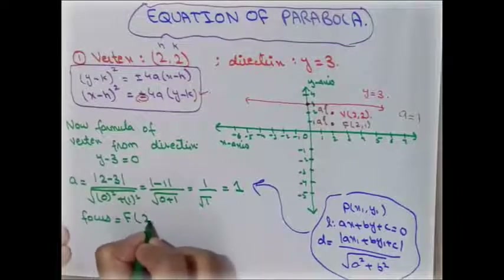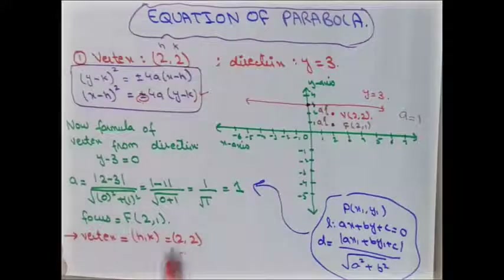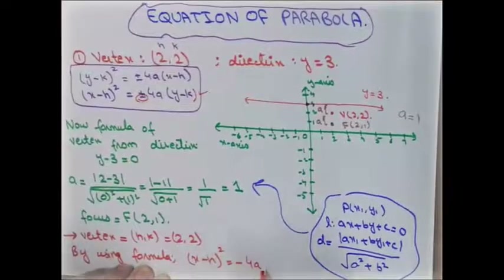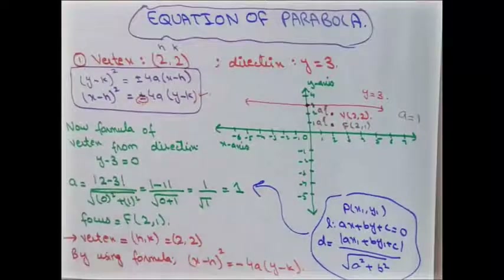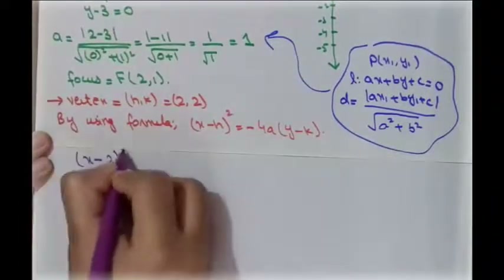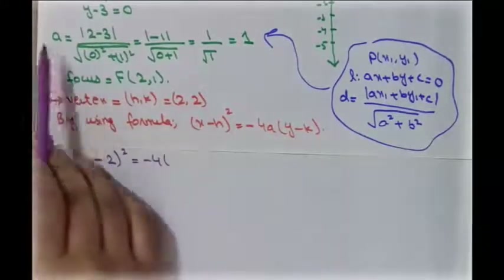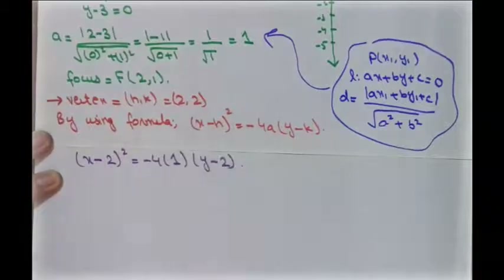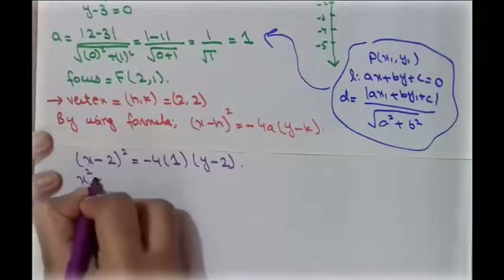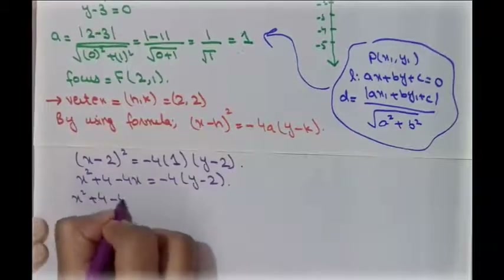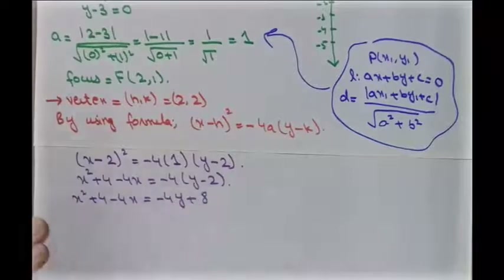We use the equation (x − h)² = −4a(y − k). Substituting the values: (x − 2)² = −4(1)(y − 2). Expanding: x² + 4 − 4x = −4y + 8.